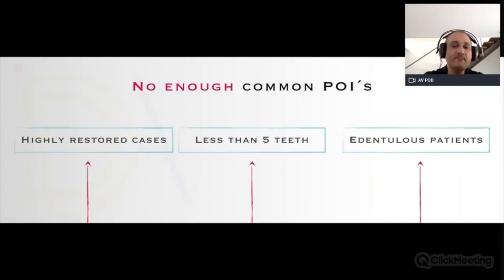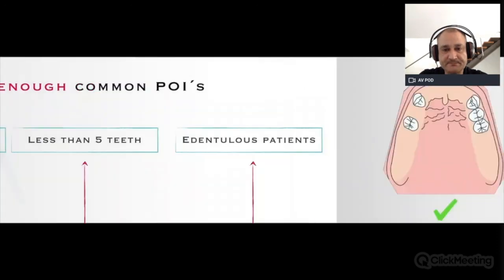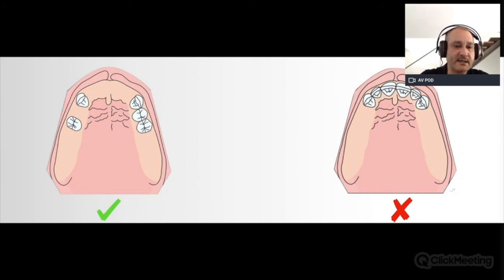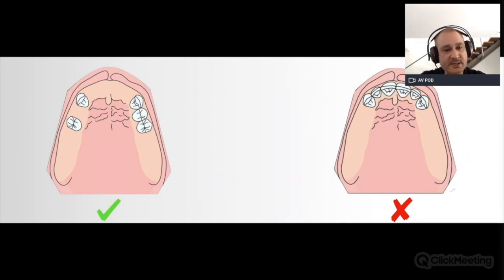The dual scan technique is needed when we don't have enough common points of interest — in highly restored cases with lots of metal, fewer than five teeth, or edentulous patients. The number of five teeth must be interpreted carefully — it's not just a number, it's about how teeth are distributed in the mouth. A bad example would be six teeth all clustered on one side; a better scenario is fewer teeth but well distributed. We don't want to see a wide edentulous ridge on one side — it is more favorable to have teeth distributed as on the favorable example.